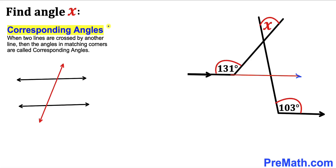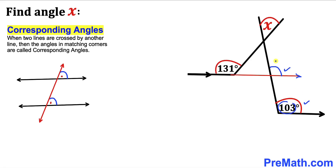Now let's recall the corresponding angles theorem. When two lines are crossed by another line, the angles in matching corners are called corresponding angles. As you can see in this diagram, these two angles are corresponding angles. Therefore in our case this angle is a corresponding angle as well, and we know that corresponding angles are congruent. So if this one is 103 degrees, this has got to be 103 degrees as well.